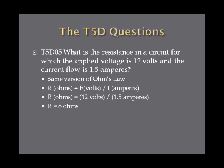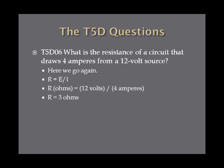What is the resistance in a circuit for which the applied voltage is 12 volts and the current flow is 1.5 amperes? Resistance in ohms equals voltage in volts divided by current in amperes. So R equals 12 volts divided by 1.5 amperes, or R equals 8 ohms. Next: What is the resistance of a circuit that draws 4 amperes from a 12 volt source? R equals E over I, so R equals 12 volts divided by 4 amperes, giving R equals 3 ohms.